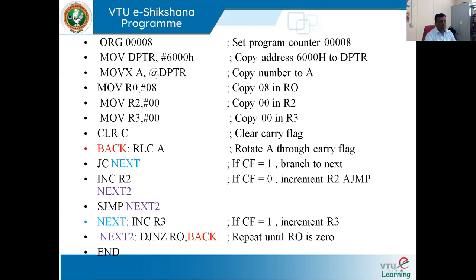MOV R2, #00H and MOV R3, #00H initialize both counters to zero — R2 will count zeros and R3 will count ones in the given eight-bit data. Then CLR C clears the carry flag, because we don't know whether the carry flag is set or reset from a previous operation, so it is always advisable to clear it.